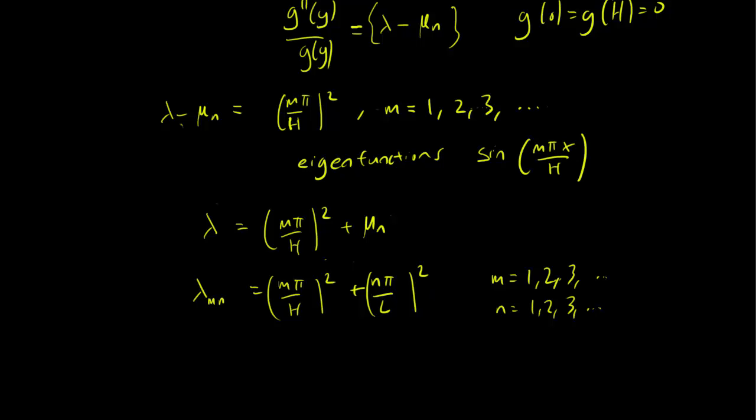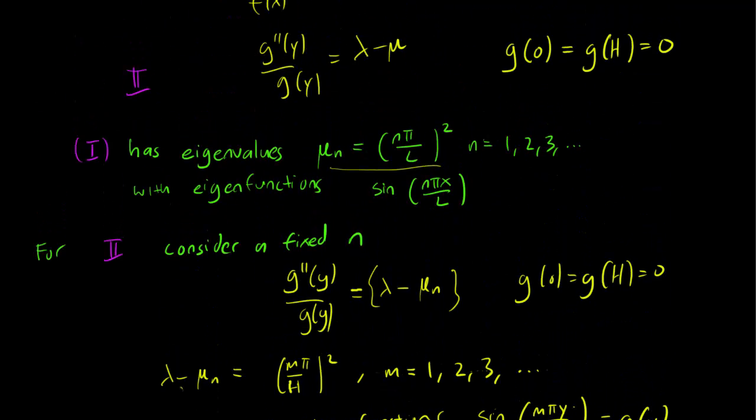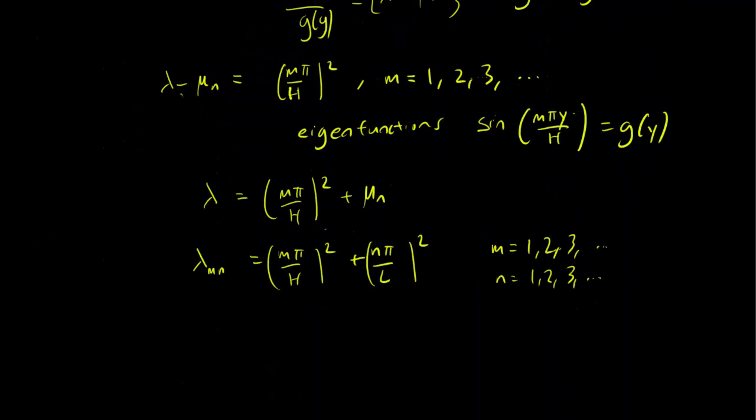and let's see what the eigenfunctions correspond to. So here is the g eigenfunction. The g eigenfunction is going to be sin(mπy/H). So this is the g eigenfunction, and this is the x eigenfunction. And therefore, this eigenvalue corresponds to an eigenfunction, let's call it f_mn(x,y), sin(mπx/L)sin(nπy/H).